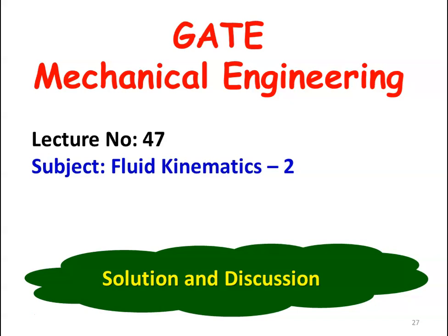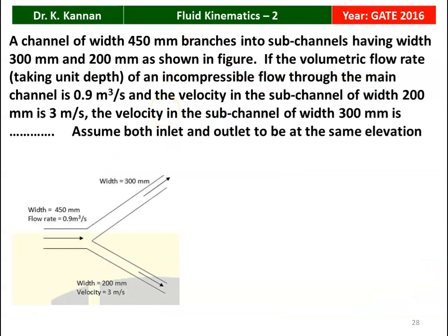The subject is Fluid Kinematics Part 2. In the earlier lecture, we discussed a few questions on Fluid Kinematics from various Gate Question Papers. We continue with the topic. The next question is from the 2016 Question Paper. A channel of width 450 mm branches into subchannels having width 300 mm and 200 mm as shown in the figure. The volumetric flow rate through the main channel is 0.9 m³/s and the velocity in the subchannel of width 200 mm is 3 m/s. The velocity in the subchannel of width 300 mm is to be found.